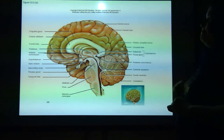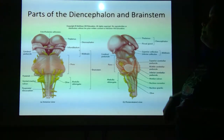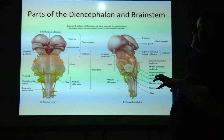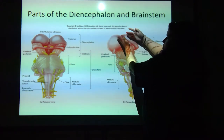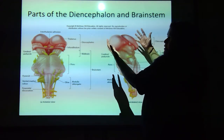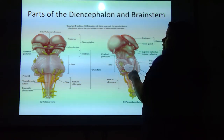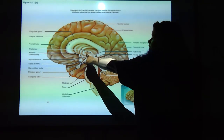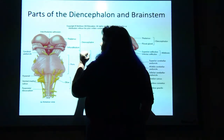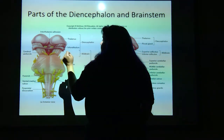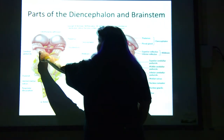Here is our diencephalon and our brainstem. Notice there are two halves of the thalamus — left and right. Remember that interthalamic adhesion — that little stick right there? Here it is holding these two halves together. The infundibulum is this little piece down here. The cerebral peduncle is here.